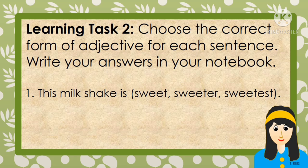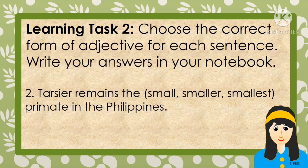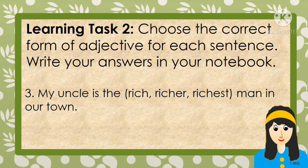For learning task number 2, choose the correct form of the adjective for each sentence. Number 1: 'This milkshake is ___.' (sweet / sweeter / sweetest) — Answer: sweet. Number 2: 'Tarsier remains the ___ primate in the Philippines.' (small / smaller / smallest) — Answer: smallest. Number 3: 'My uncle is the ___ man in our town.' (rich / richer / richest) — Answer: richest.